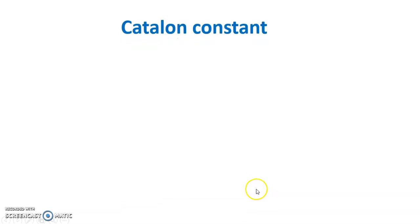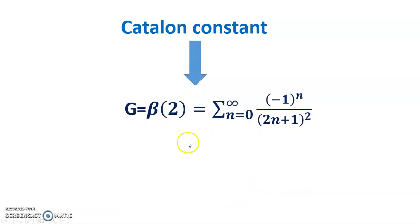Hello dear friends, welcome to my channel. Today's discussion is the Catalan constant. The Catalan constant is denoted by G, and equals beta 2, which is the sum from n equals 0 to infinity of minus 1 to the power n divided by 2n plus 1, whole squared. This constant is very important for all mathematicians and physics students.